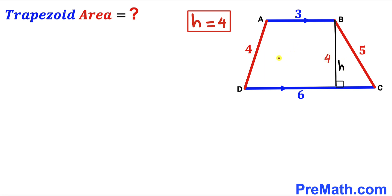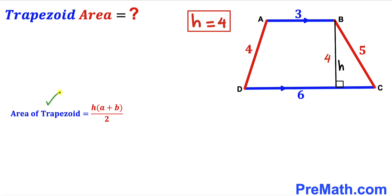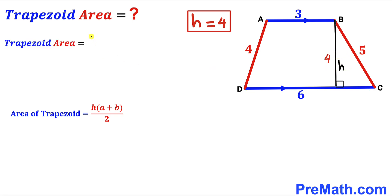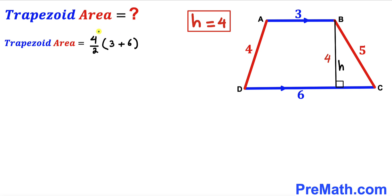Now for the final step, we calculate the area of trapezoid ABCD using the formula Area = H × (a+b)/2. Our base a is 3, base b is 6, and height H is 4. Substituting: Area = 4/2 × (3+6) = 2 × 9 = 18 square units.